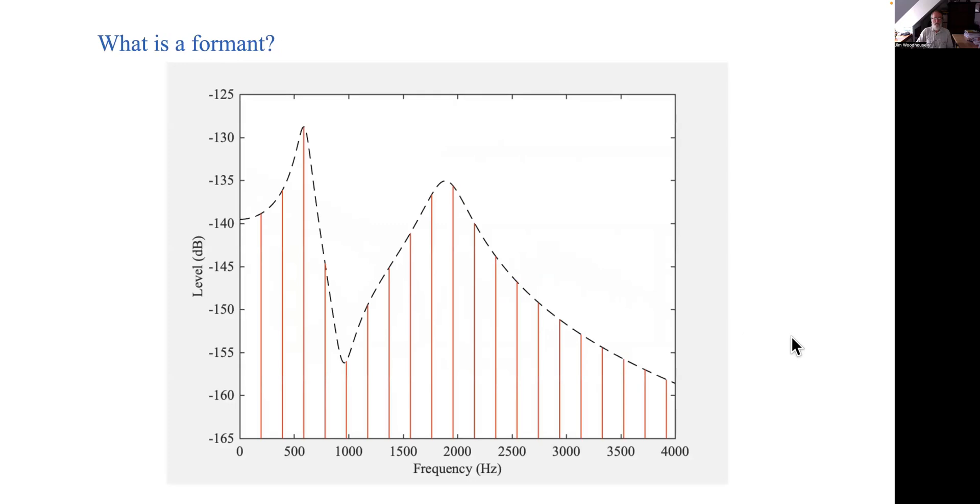Now what is a formant? I've borrowed the description from something that people use when they're describing speaking or singing. Now when you sing a melody think about it, you can sing the same vowel sound at different pitches and on a good day the listener will be able to tell both things. They'll be able to tell what pitch you're singing and which vowel you're singing. So how is that done?